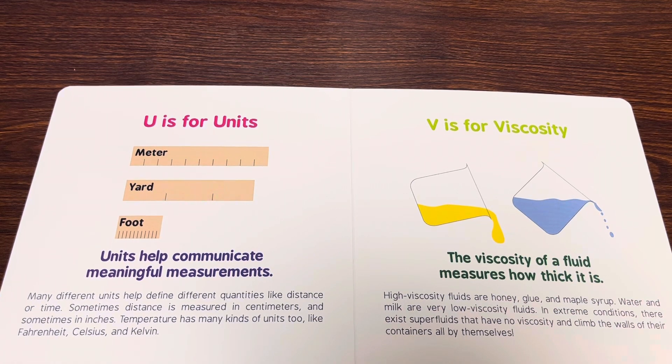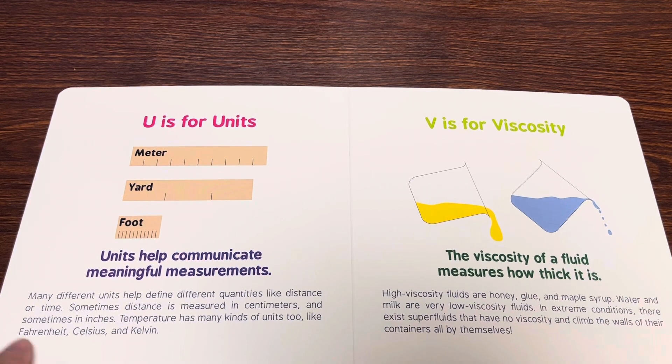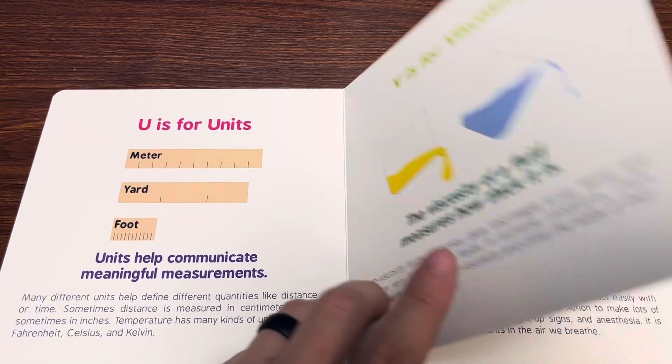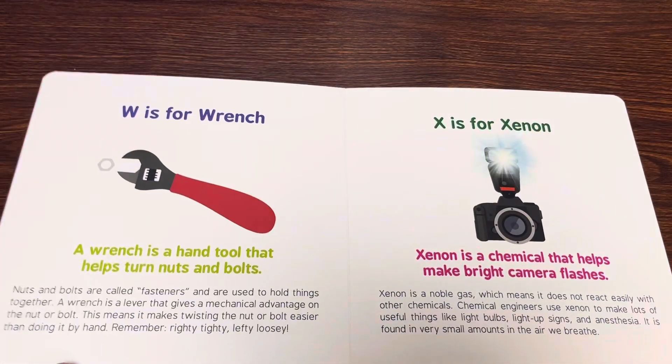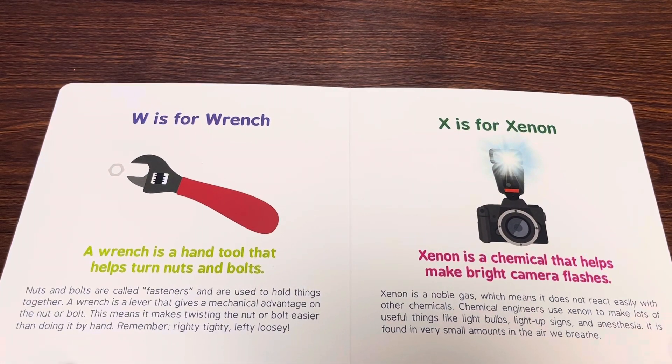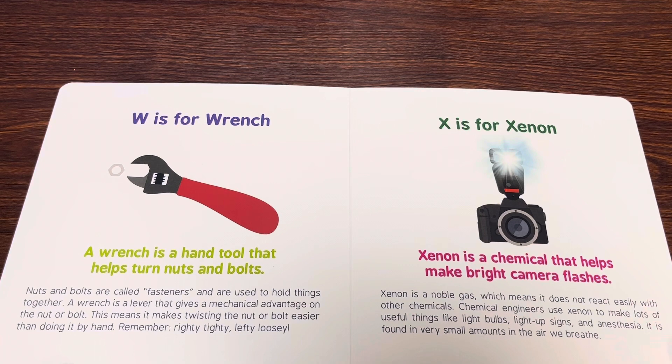V is for viscosity. The viscosity of a fluid measures how thick it is. W is for wrench. A wrench is a hand tool that helps turn nuts and bolts.